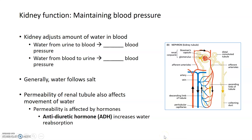Because kidneys adjust the amount of water in the blood by collecting or resorbing fluids, kidneys directly affect blood pressure. When water moves from urine in the collecting tubule into the blood, blood pressure increases because there's more volume in the blood — more volume in a small artery generates more pressure. The opposite occurs when water moves from the blood into the collecting tubule, leading to a decrease in blood pressure.